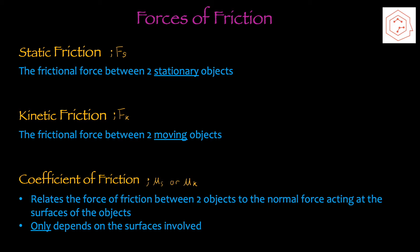The coefficient of friction, represented by mu s or mu k, relates the force of friction between two objects to the normal force acting at the surfaces of those objects. This only depends on the surfaces involved — so the type of material. Other factors don't come into play here, such as surface area.